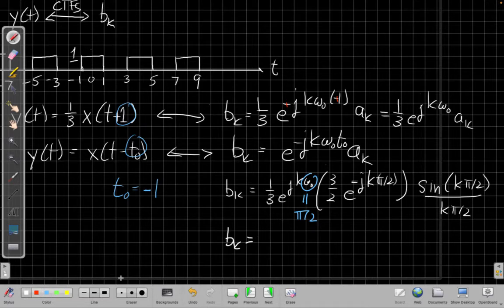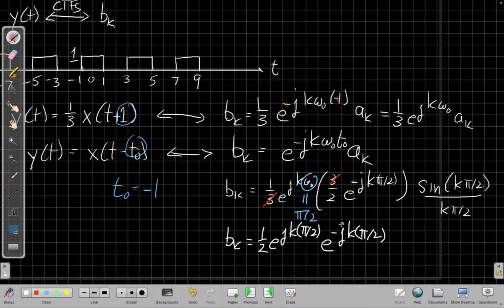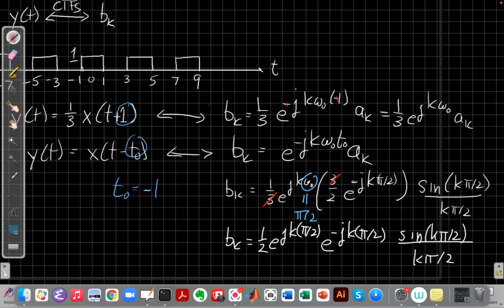So, I have 1 third here. I can cancel the 3 from the 1 third with the 3 in the 3 halves. And then if I put these together, I'll have e to the j k pi over 2 and minus j k pi over 2. So I've put these two terms together. I have to not lose this half from down here. I'll put that half out front so I don't lose it. And then I still have my sinc function here.